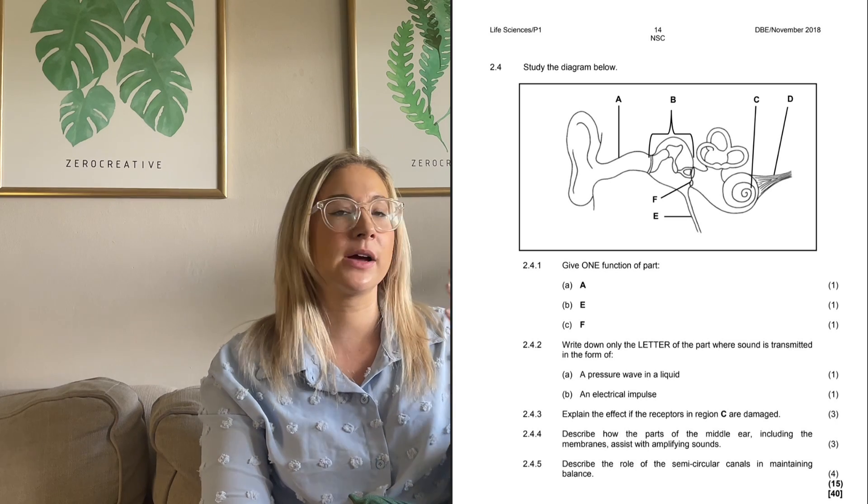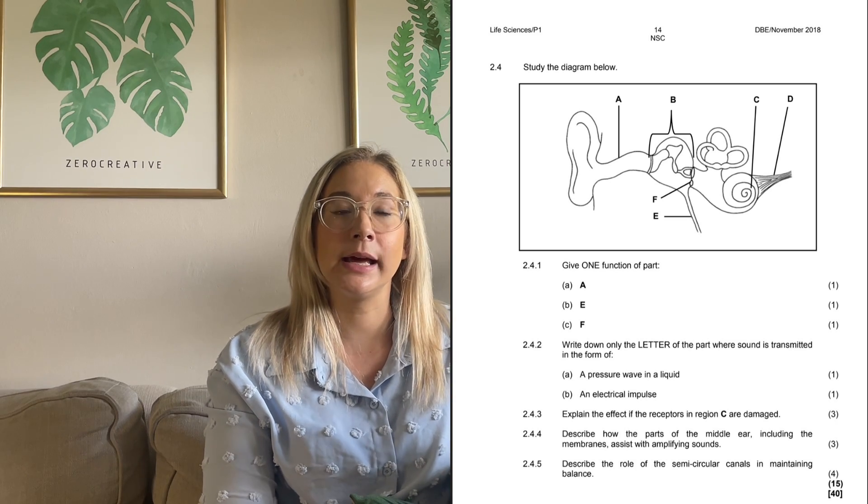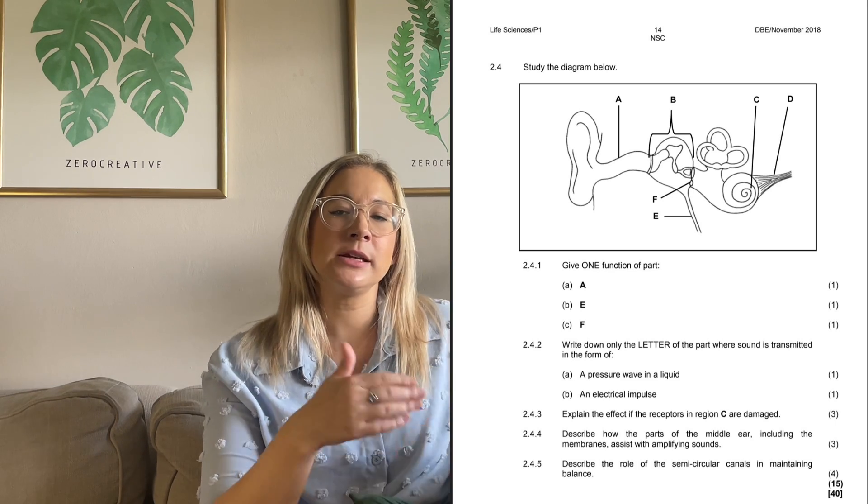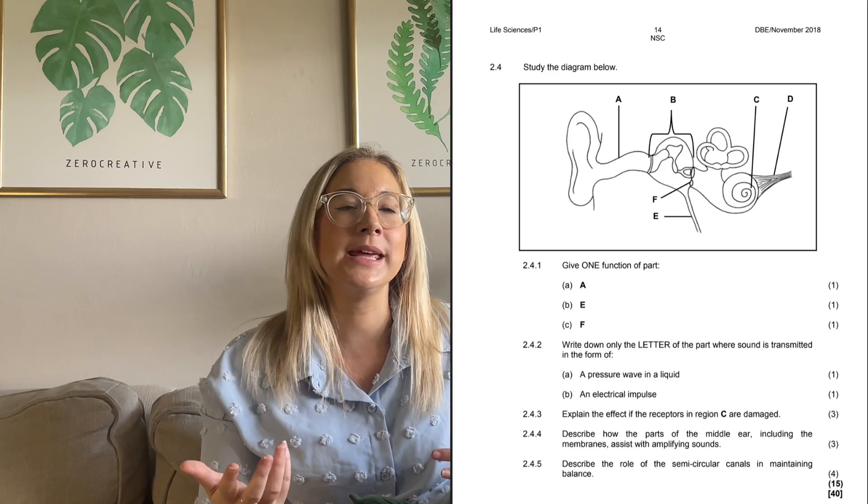Historically they rotate through a few of the same topics over and over again. I do think one of the questions showing up in question one is going to be the ear — you'll have label sections of the ear, maybe give a couple of functions, but nothing too detailed. If the ear comes up in Q1, then the eye must appear later on because they're never going to double up on the ear only and not ask anything about the eye. There is room for another ear question later in section B, questions two and three.